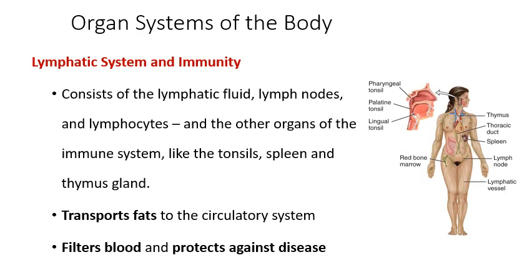The lymphatic system and immune system kind of work together. The immune system is responsible for protecting you against pathogens and infectious disease, recognizing abnormal cells and destroying cancers, taking down bacteria and viruses, and cleaning the body of debris. The lymphatic system helps by filtering the blood and aiding in the transportation of fats from your digestive system to your circulatory system.